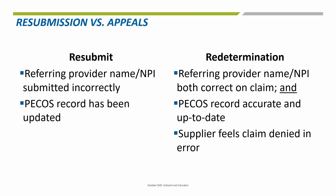If a claim denies with a PECOS remark code, suppliers are encouraged to correct and resubmit the claim if the referring provider name and/or NPI was submitted incorrectly on the claim, or an update has recently been made to the referring provider's PECOS record. However, if the supplier feels the claim was denied in error because the referring provider information was submitted correctly on the claim and the PECOS record is accurate, then a written redetermination should be submitted.